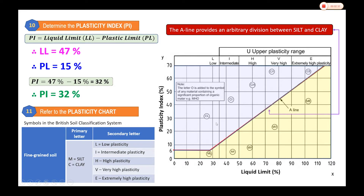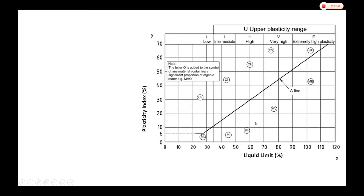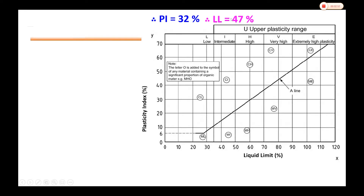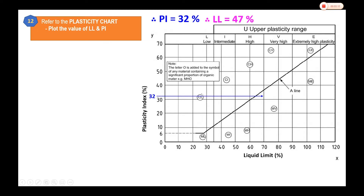This is how we use the plasticity chart — we need to determine which region our soil sample is located in. Referring to the plasticity chart with plasticity index 32% and liquid limit 47%, we plot PI 32% on the y-axis and draw a horizontal line, then identify liquid limit 47% on the x-axis and draw a vertical line upward. We then find the intersection point between these two lines.